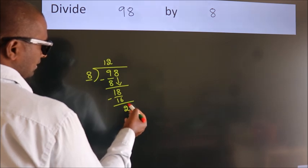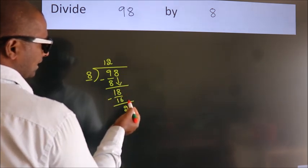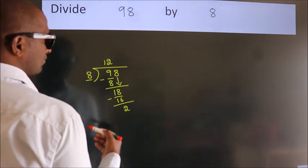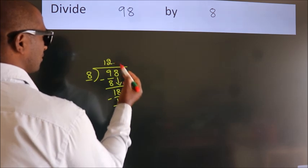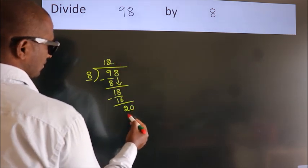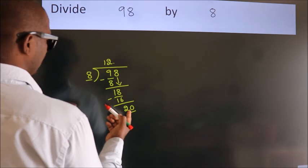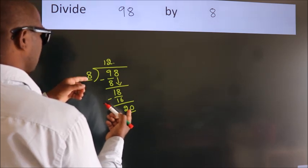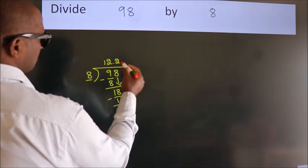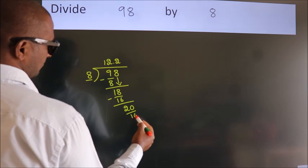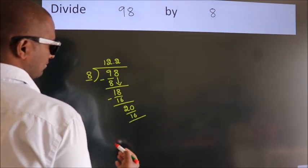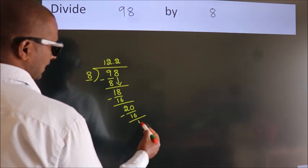After this, there are no more numbers to bring down. So what we do is put a dot and take 0, giving us 20. A number close to 20 in the 8 table is 8 times 2 is 16. Now we subtract and get 4.